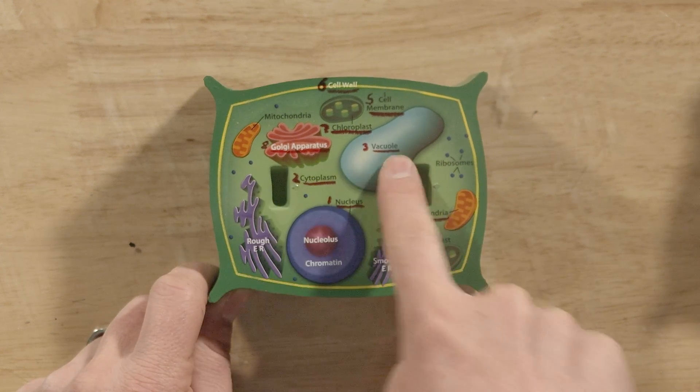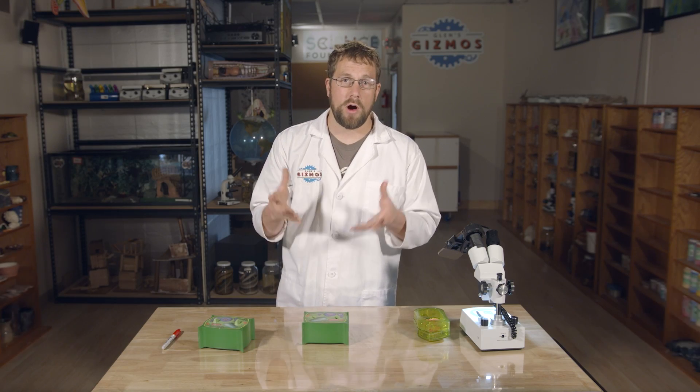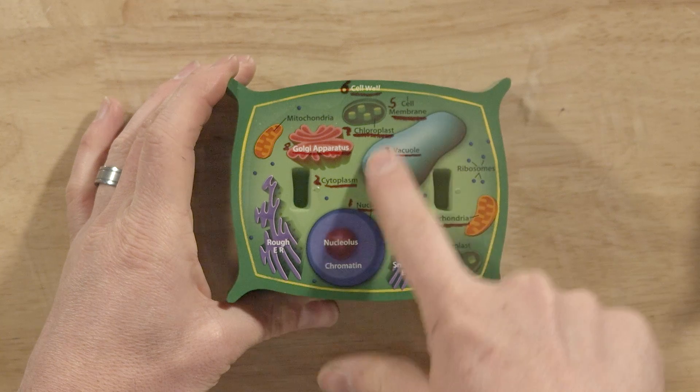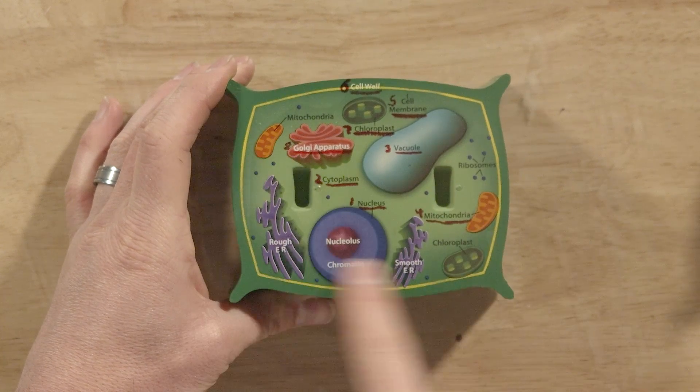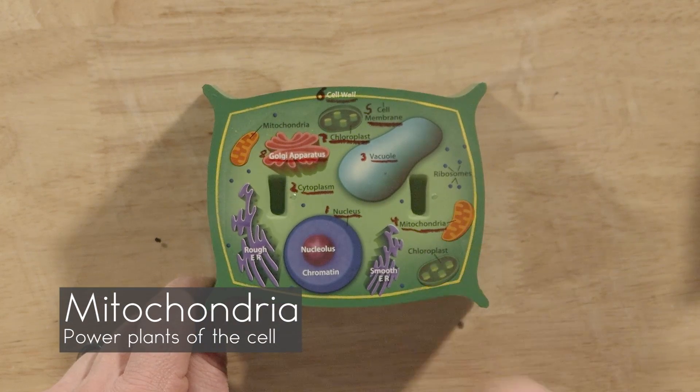Then we have the vacuole. This is one area where plant and animal cells are different. Plant cells have to remain rigid. If they get too wilty or limp, the plant will wilt. So if a plant doesn't get enough water, it wilts over. Part of that is the vacuole — it remains full and creates pressure that holds the shape of the plant cell out against the cell wall. We have mitochondria up next.